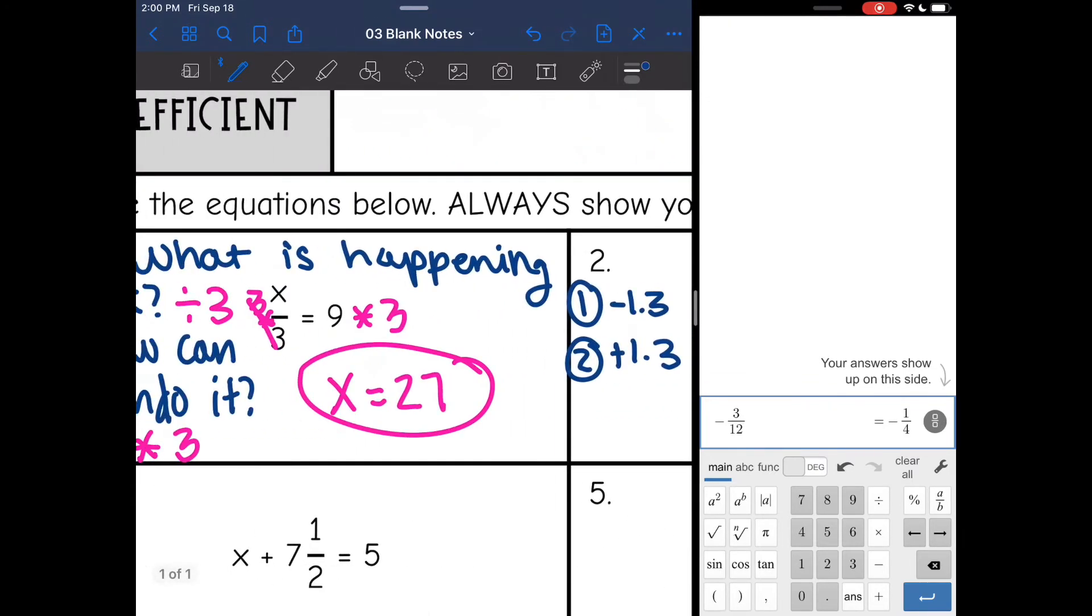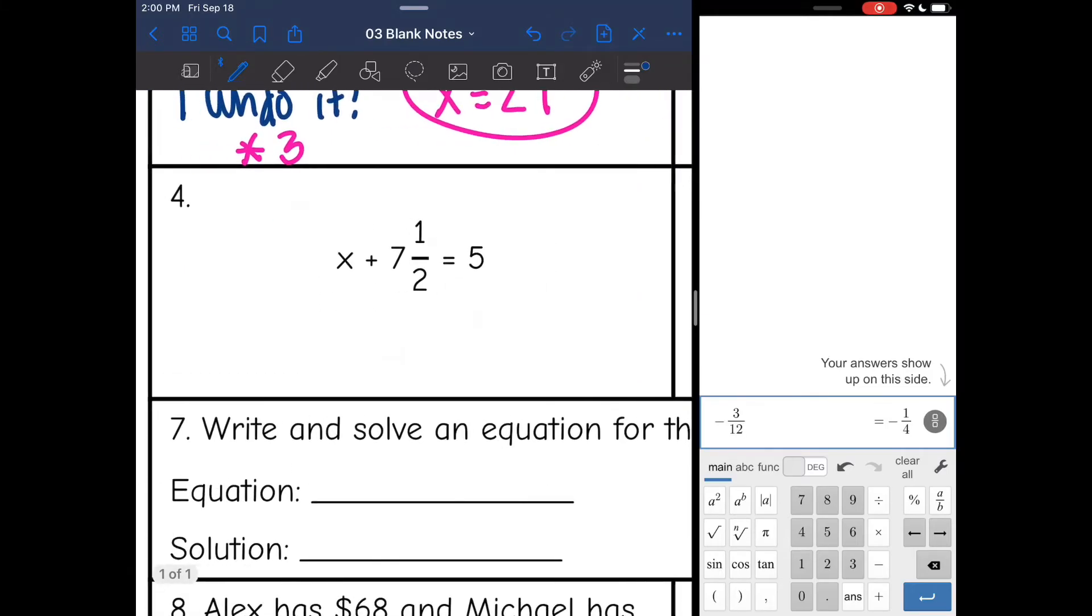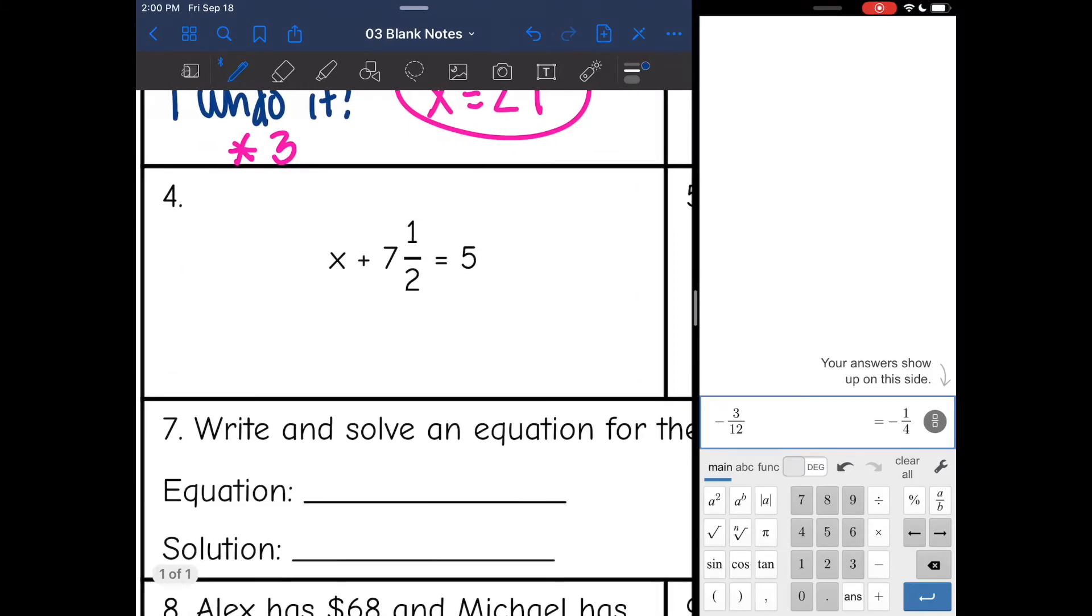I'm going to keep asking myself those two questions, but I'm not going to write it out anymore. I am adding 7.5 to x here. So the opposite of adding 7.5 is subtracting 7.5, and I get x equals negative 2.5.